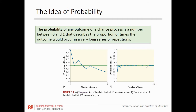The probability of an outcome of a chance process is a number between zero and one. Zero means it never happens; one means it's guaranteed to happen. It describes the proportion of times the outcome would occur in a very long series of repetitions. So flipping a coin 500 times will produce a proportion of heads very, very close to 50%, which is what that probability actually is.